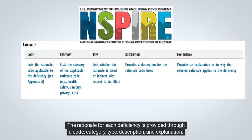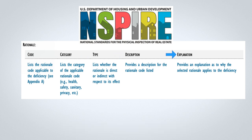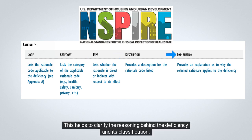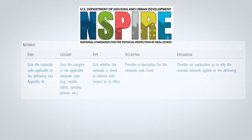The rationale for each deficiency is provided through a code, category, type, description, and explanation. This helps to clarify the reasoning behind the deficiency and its classification.